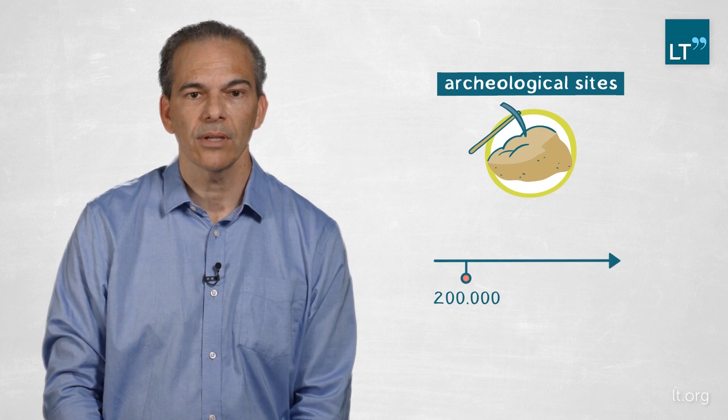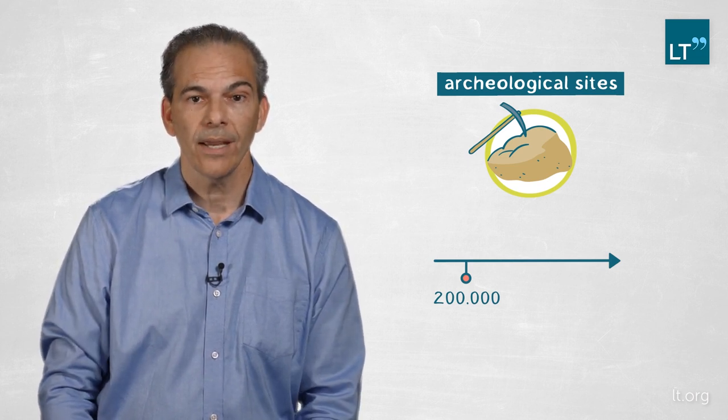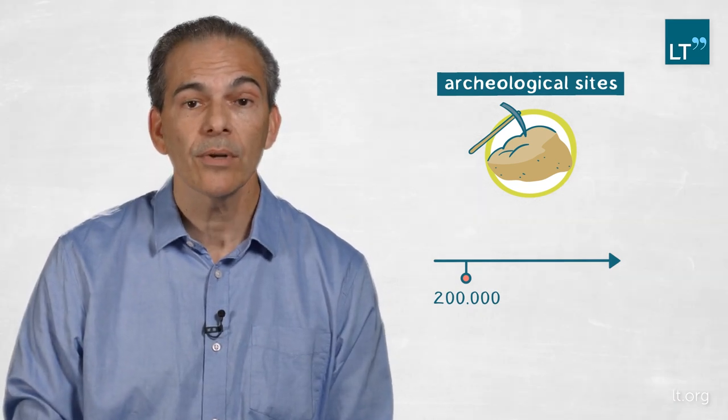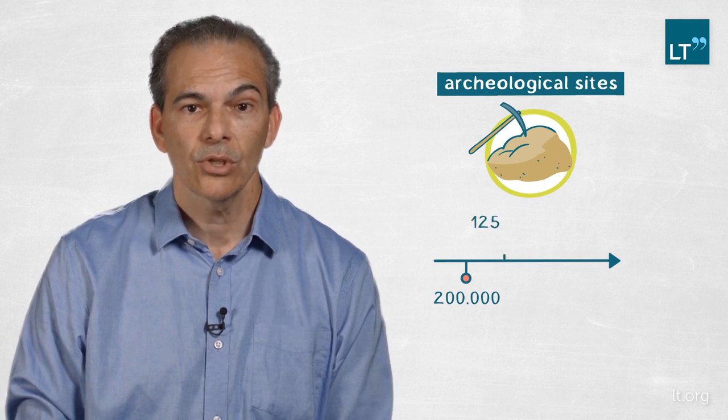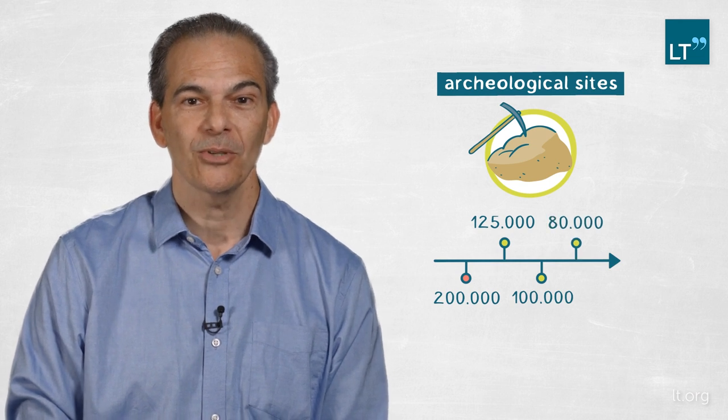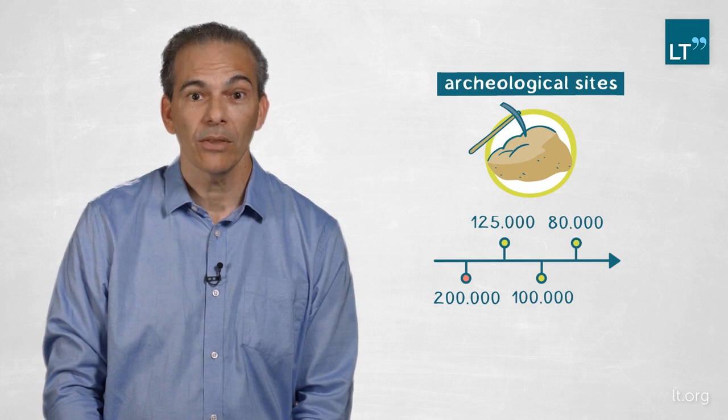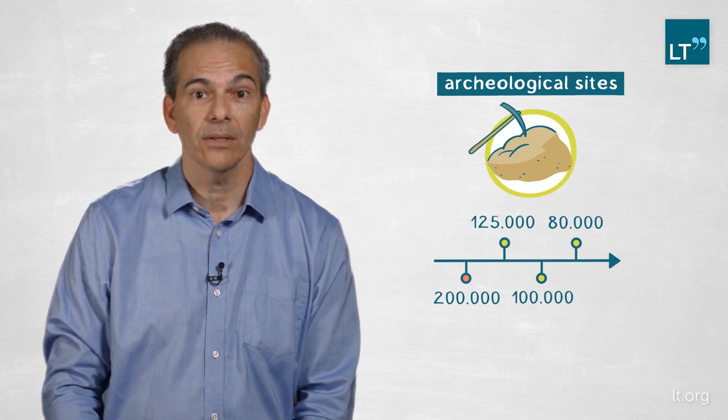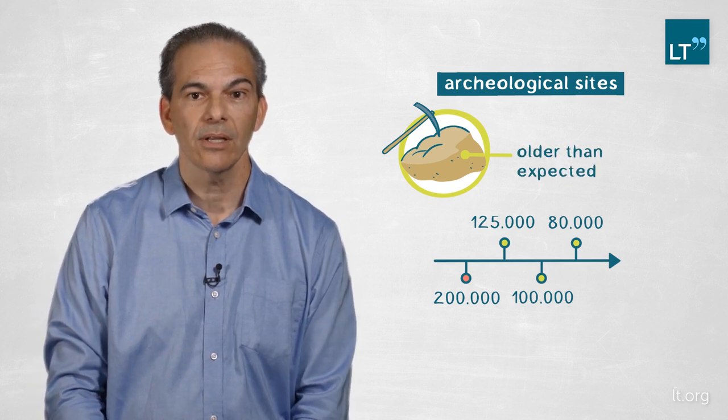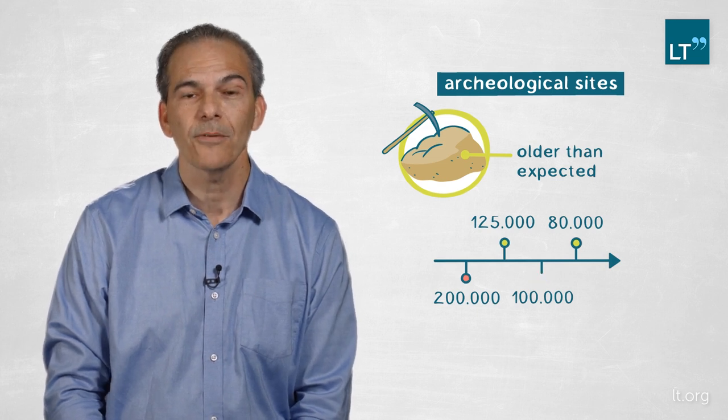The sites are not only 200,000 years old but represent multiple phases of wet episodes. We have sites 200,000 years old, 125,000 years old, 100,000 years old, and 80,000 years old. All of these archaeological sites, which we think represent Homo sapiens, are much older than our traditional theory of 60,000 years ago for the emergence of modern humans out of Africa.